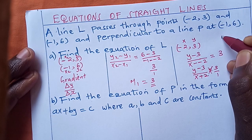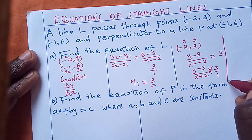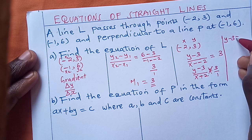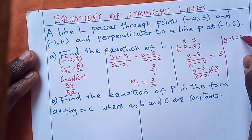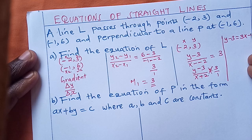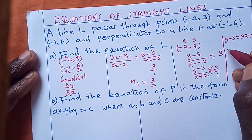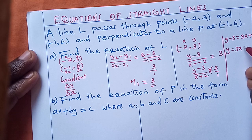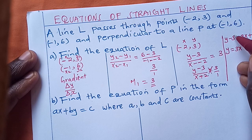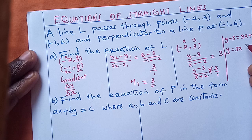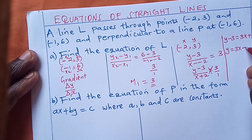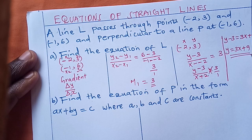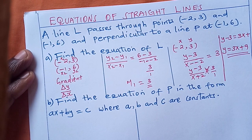We cross multiply. After cross multiplication we find y - 3 = 3x + 6. Putting like terms together: y = 3x + 6 + 3, which gives y = 3x + 9. This is the equation for line L.